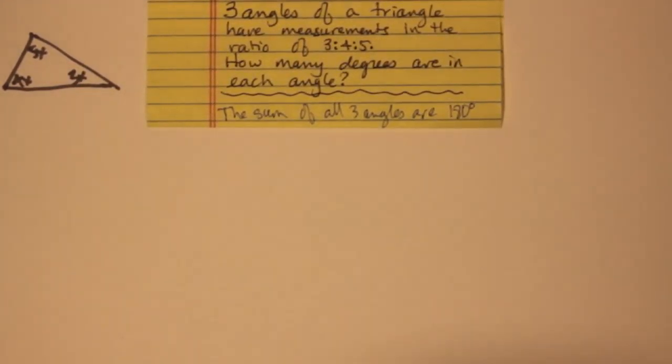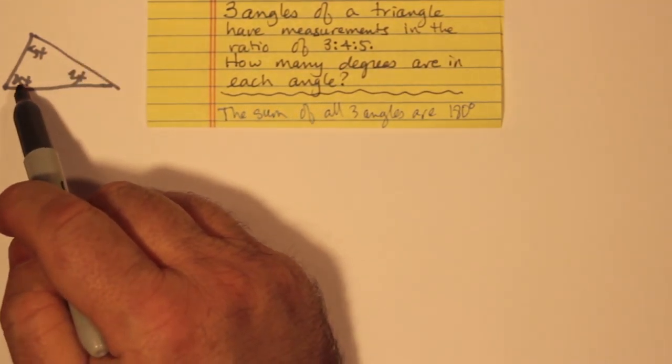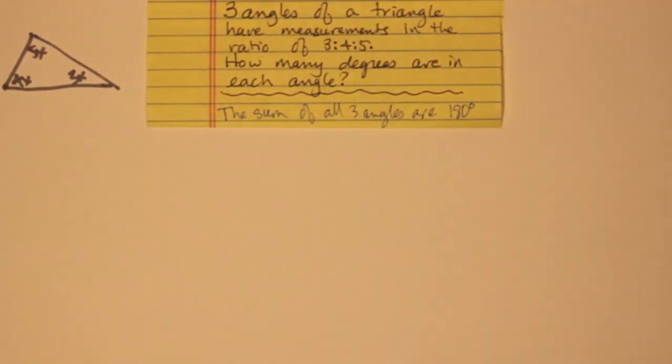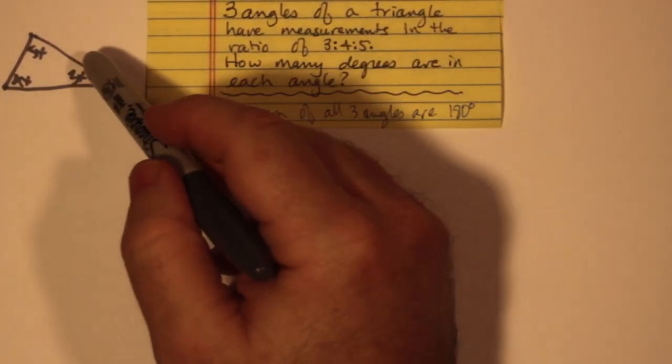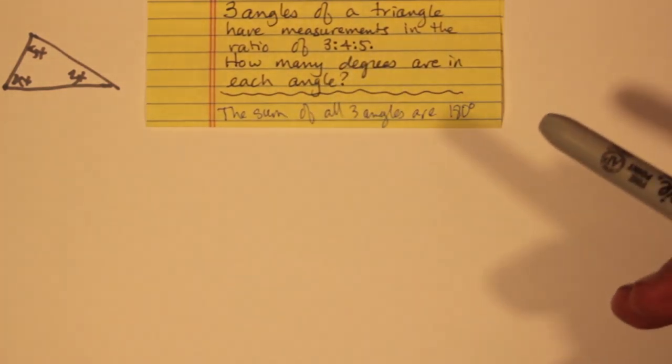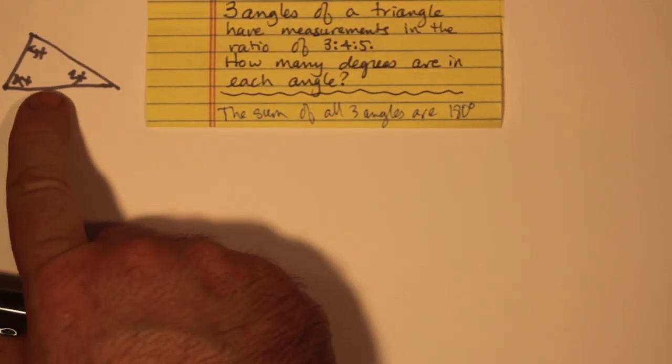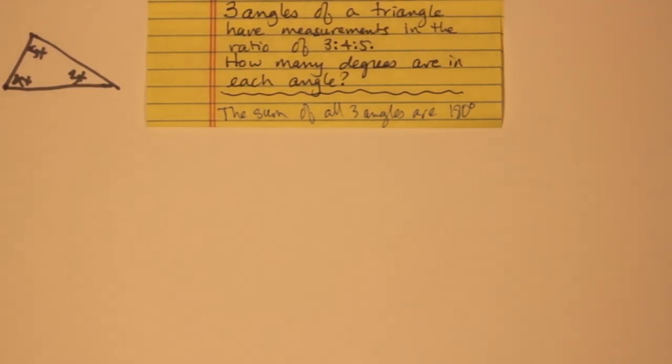And basically the ratio, if this is three times a number, then this must be four times a number, this must be five times a number. The ratio, remember, ensures that all members, 3, 4, and 5, all go up in the same amount or decrease in the same amount. And we can actually fix these depending on what x is.